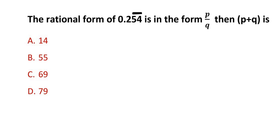Hello and welcome to my channel. In this video we are going to solve an example on recurring decimals from real numbers. The question is: the rational form of 0.254 (where 54 is recurring) is in the form p over q. Then p plus q is...